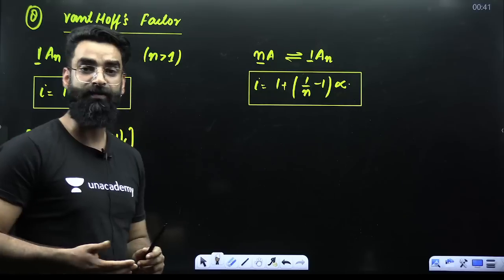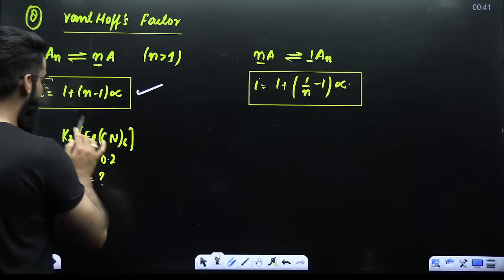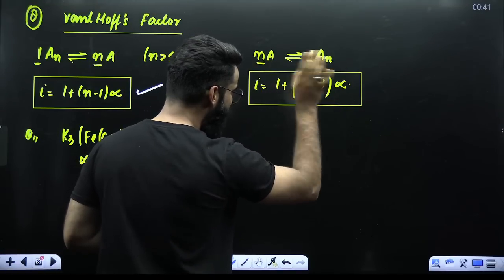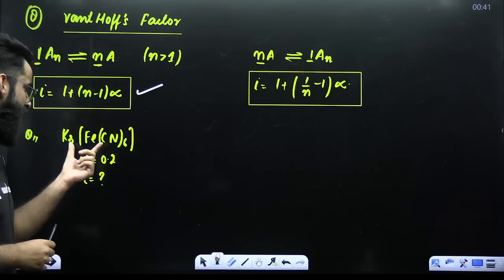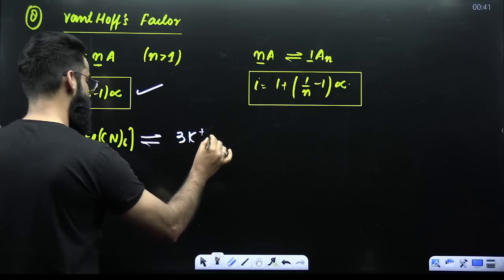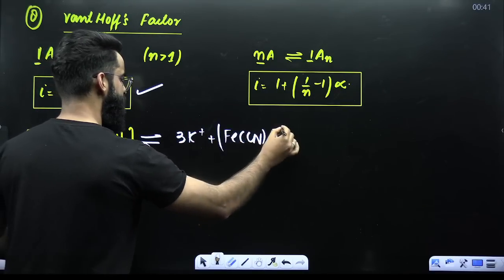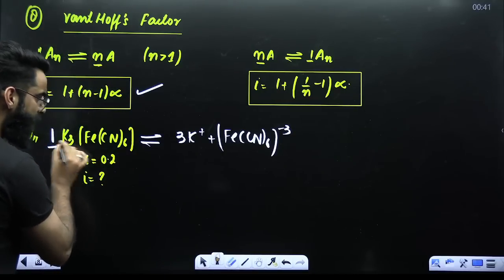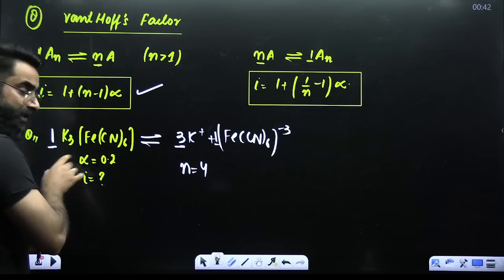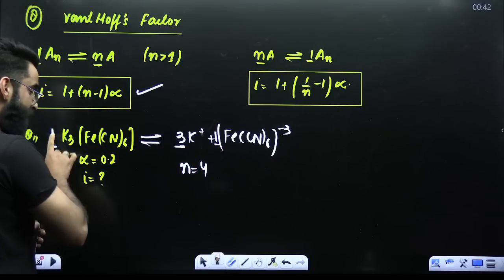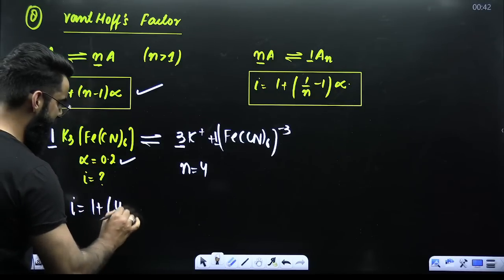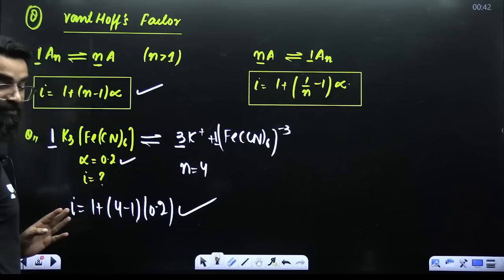Concept: calculation of Van't Hoff factor (i). For any solute that undergoes dissociation: i equals 1 plus (N−1) × alpha. For association: i equals 1 plus (1/N − 1) × alpha. For example, K₃[Fe(CN)₆] dissociates as 3K⁺ plus [Fe(CN)₆]³⁻, giving 4 particles, so N equals 4. With N=4 and alpha=0.2, substitute into i equals 1 plus (4−1) × 0.2 to get the Van't Hoff factor.